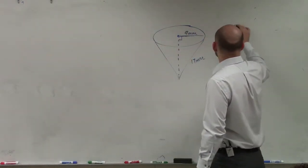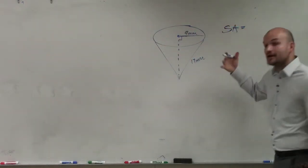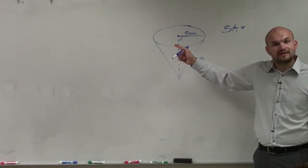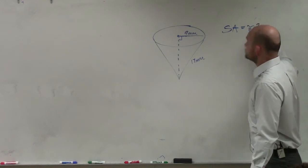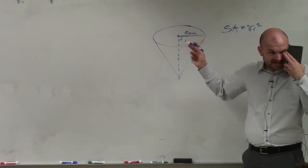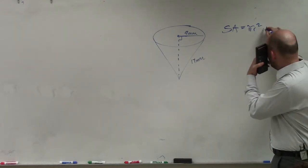So the surface area is going to be the area of the base. And now, since this is a circle, we know that the area of the base is going to be pi r squared. That's going to be the area of the circle, which is our base. And then add that to the lateral area.